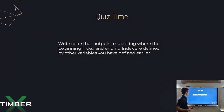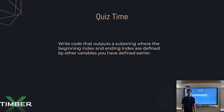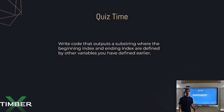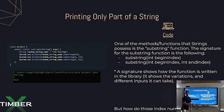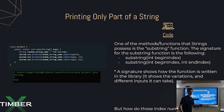Quiz time: write code that outputs a substring where the beginning index and ending index are defined by other variables you defined earlier. This is pretty straightforward — go ahead and pause. Effectively, all you have to do is instead of writing four directly, define an integer earlier on and use that variable name in place of four. This just gets you more comfortable using data types and integrating them into methods and functions.